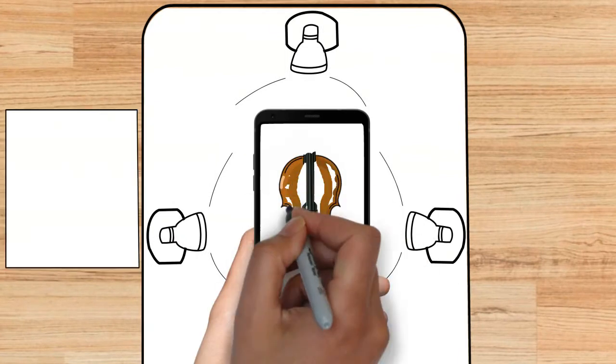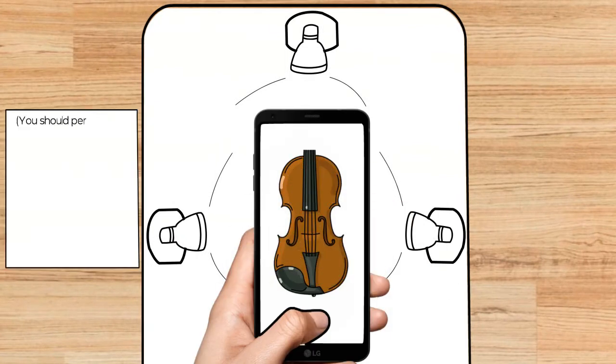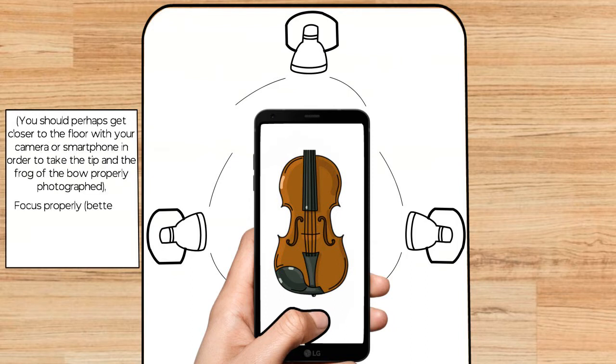You should perhaps get closer to the floor with your camera or smartphone in order to get the tip and the frog of the bow properly photographed. Focus properly, better to use autofocus, and take your pictures.